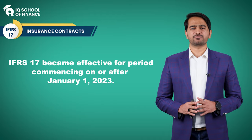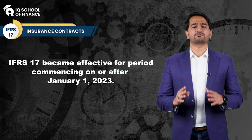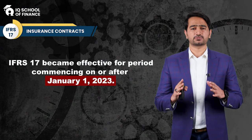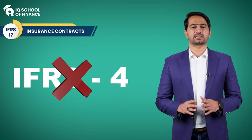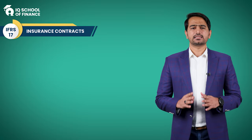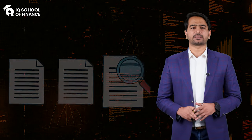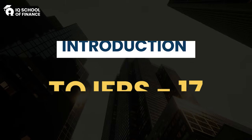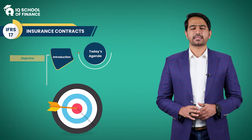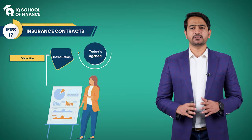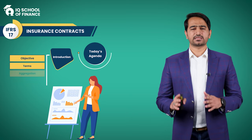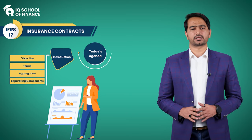IFRS 17 became effective for periods commencing on or after 1st January 2023, which means that IFRS 4 is no longer used. Let's explore the specific provisions of IFRS 17 covering a few key topics. This standard sets out the goal, explains the main terms, and talks about the aggregation and separating components in the contract.